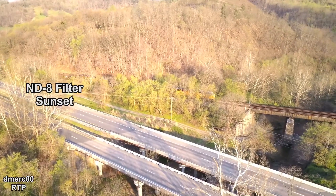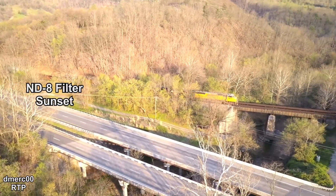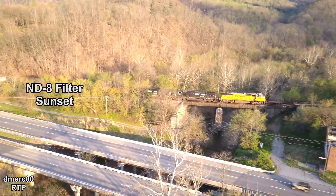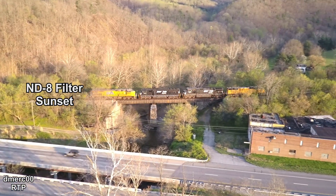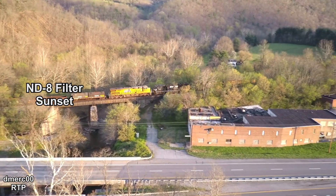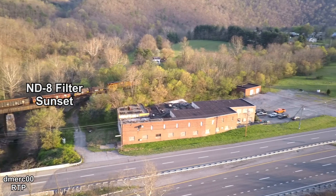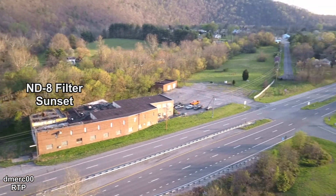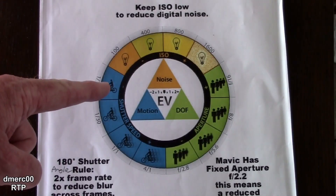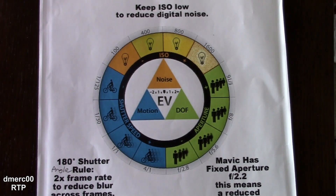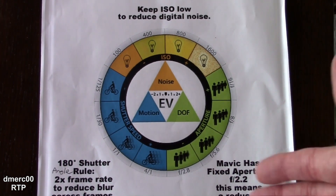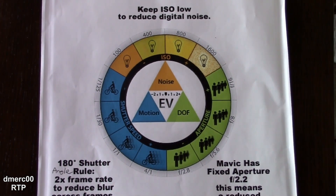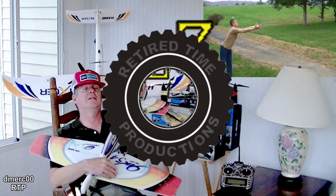I want to show you some flight footage and I used the ND8 filter for the first few flights and the ND16 filter for the second few flights, just to look at the differences. I did the settings according to this chart right here, so I want to go over this briefly during the video, showing you how to compare this chart to the settings in the Mavic since the aperture is fixed on the Mavic. Welcome to Retired Time Productions.